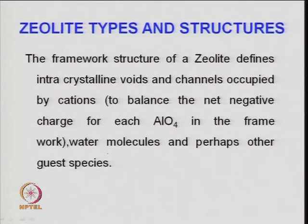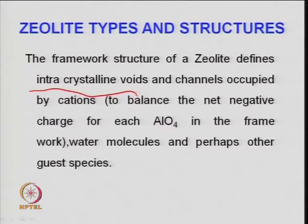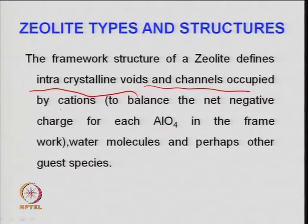Structure is very important in the case of zeolite and accordingly we discuss the types. The framework structure is defined based on intra-crystalline voids. The primary building unit has a cage-type structure, and depending on the number of oxygen or T-atoms in the ring you get a definite shape. These crystalline voids and channels are occupied by cations because there is a net negative charge when aluminum is added to the framework.